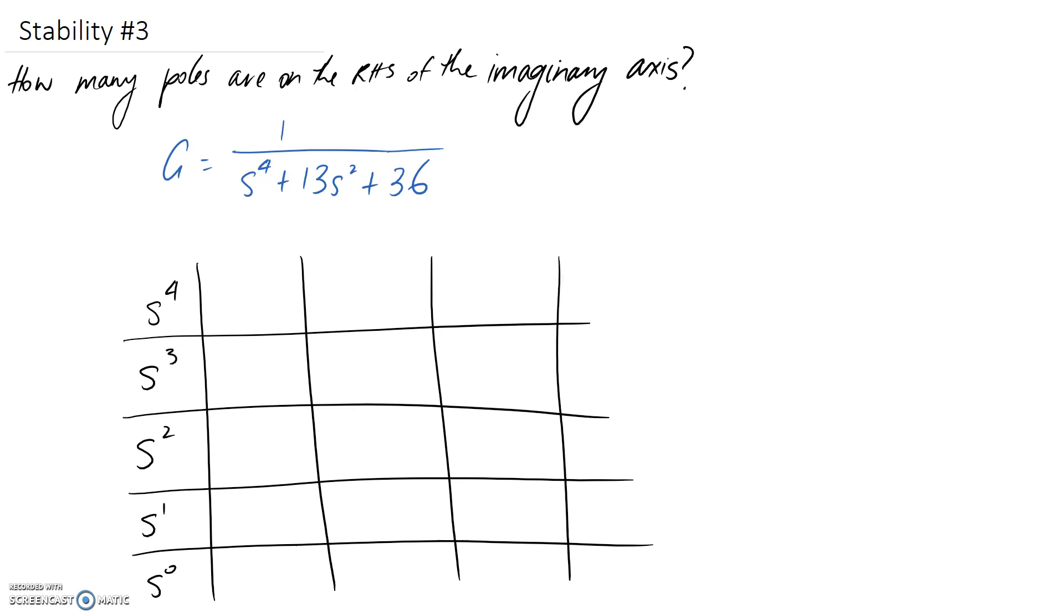So filling in our coefficients, the coefficient in front of our highest power of s is going to be a 1. It's like 1s to the fourth, so that's what goes in here. Now, we don't have an s to the 3 listed in here, so that would suggest that the coefficient in front of that term is a 0. So that's what we can put here. Next, we go up to this cell, and we've got an s squared term, and the coefficient is 13, so that's what goes here.